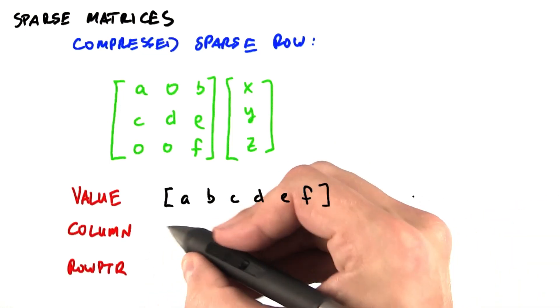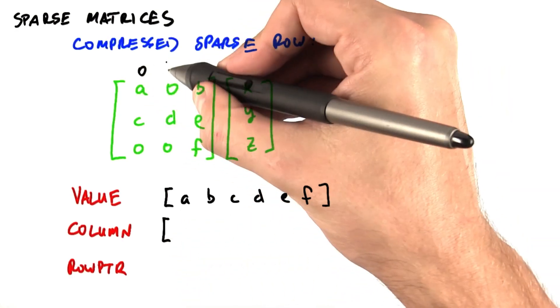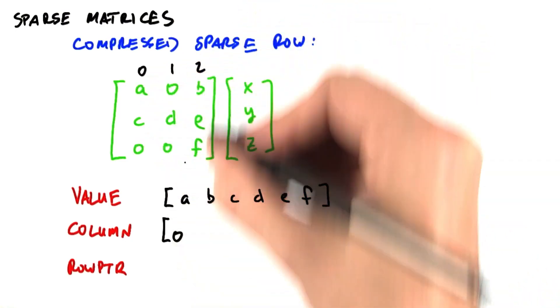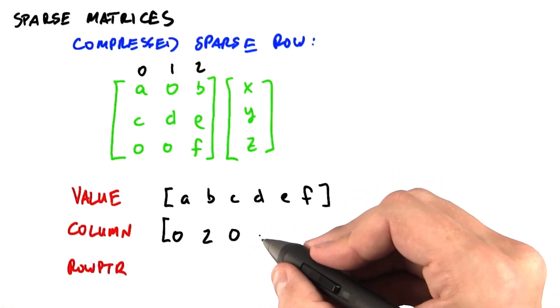The second array that we need is recording which column each of these data came from. For instance, A is in column 0, B is in column 2, C is in column 0, and so on.